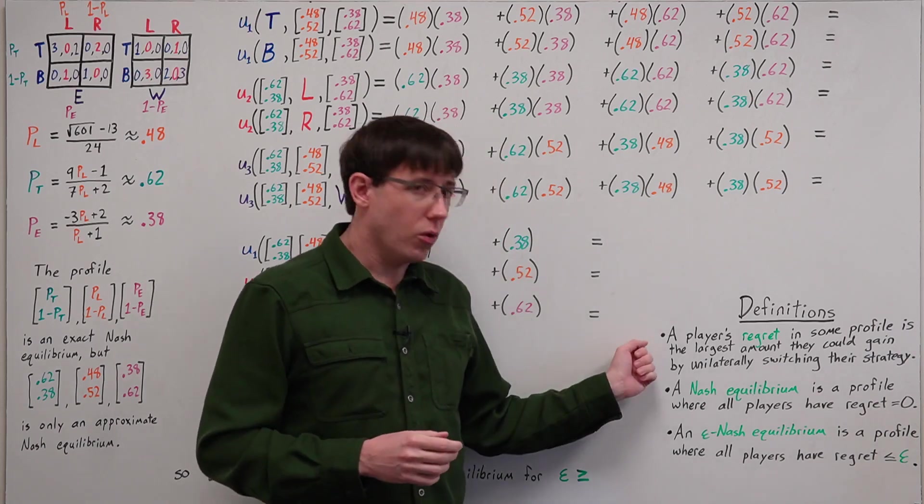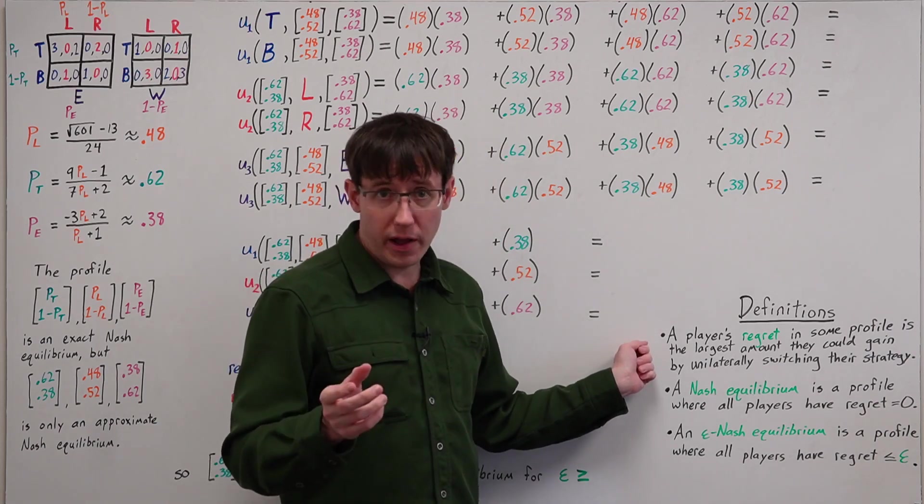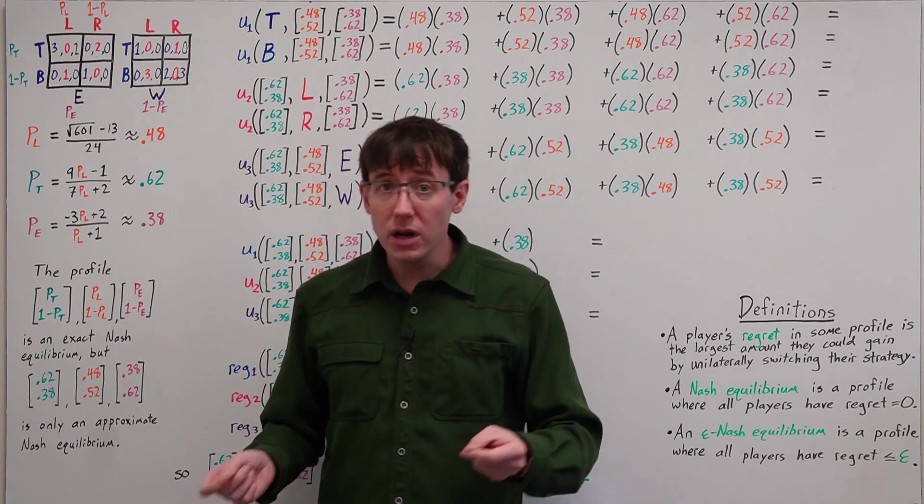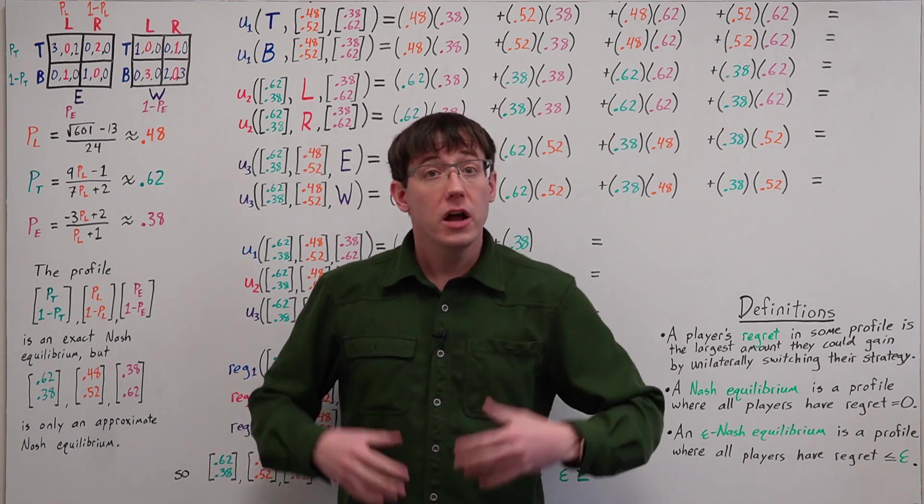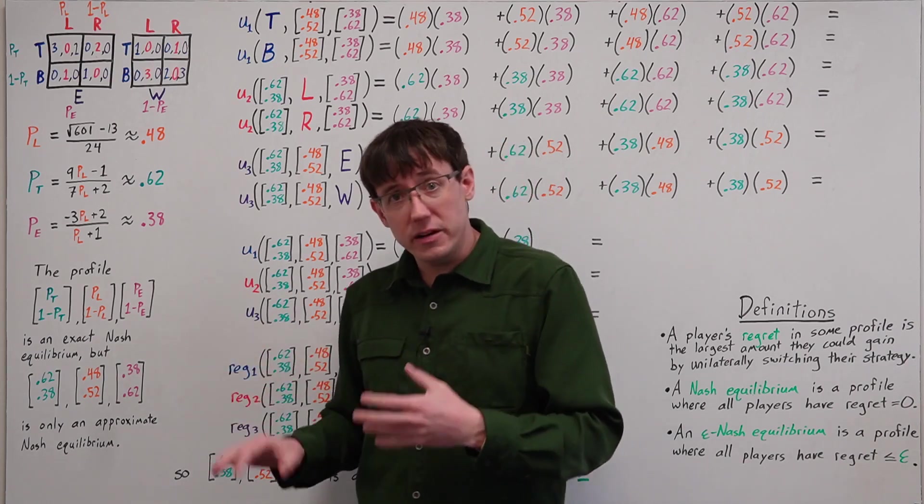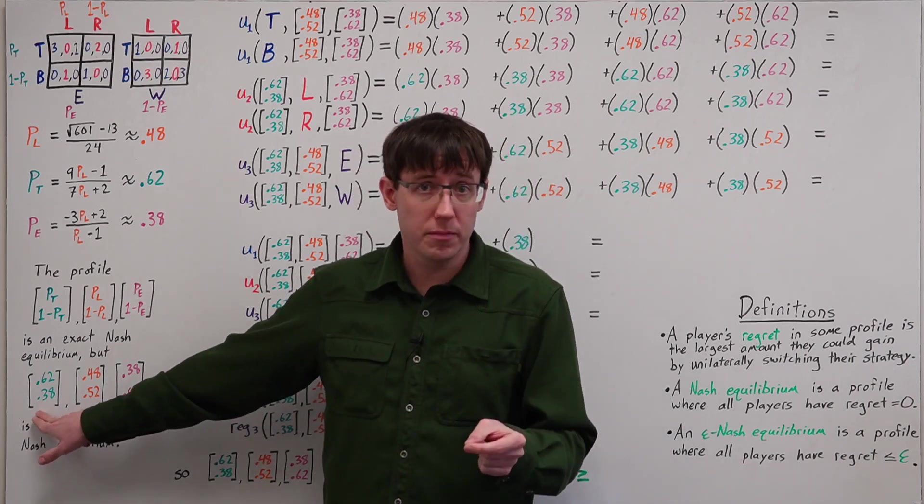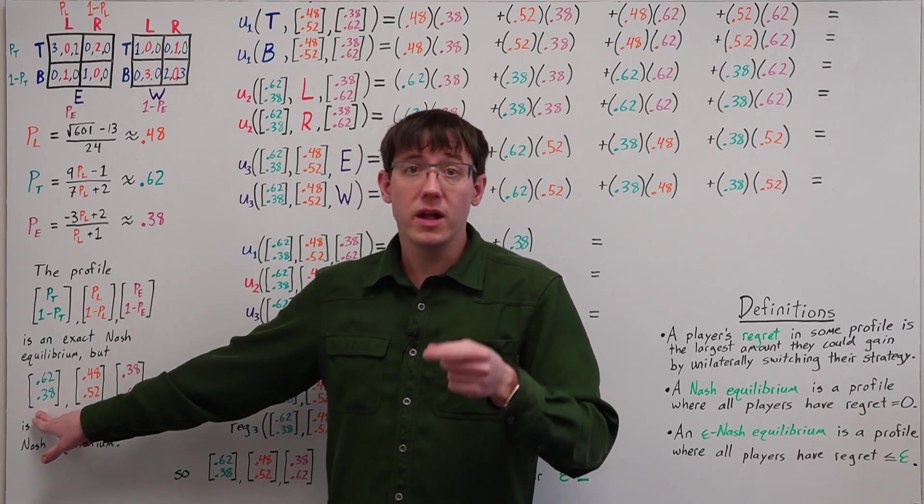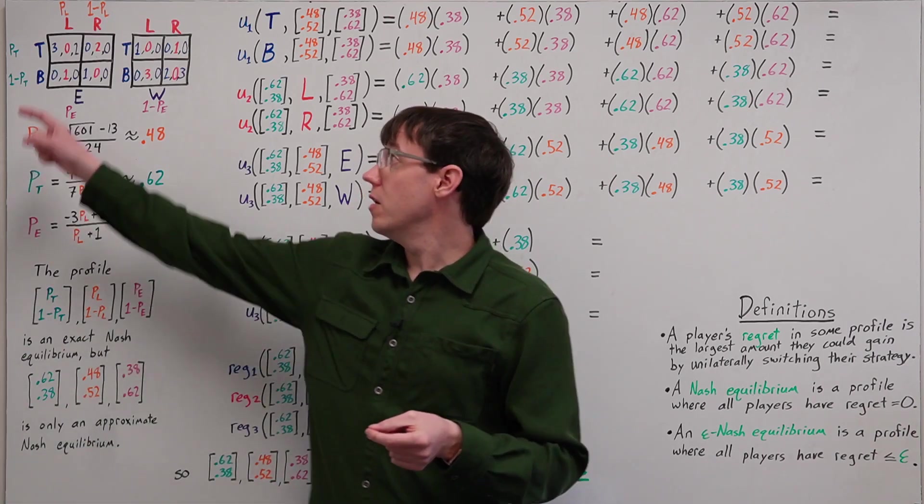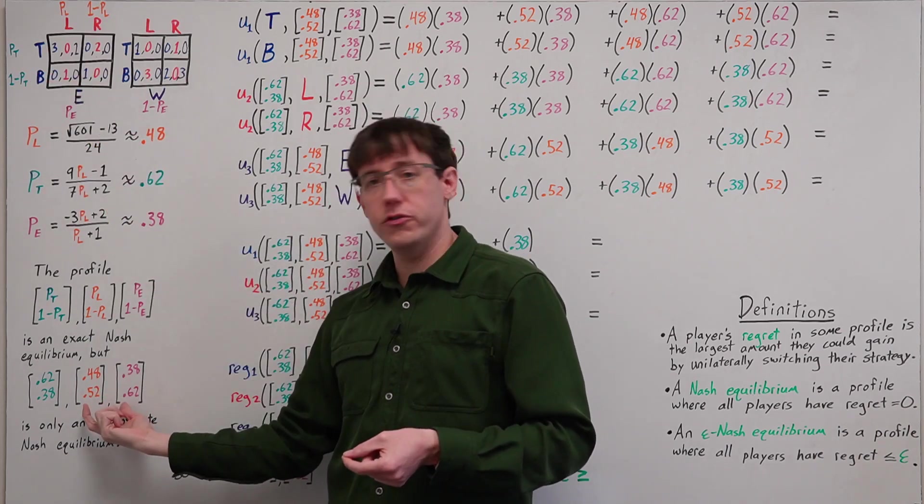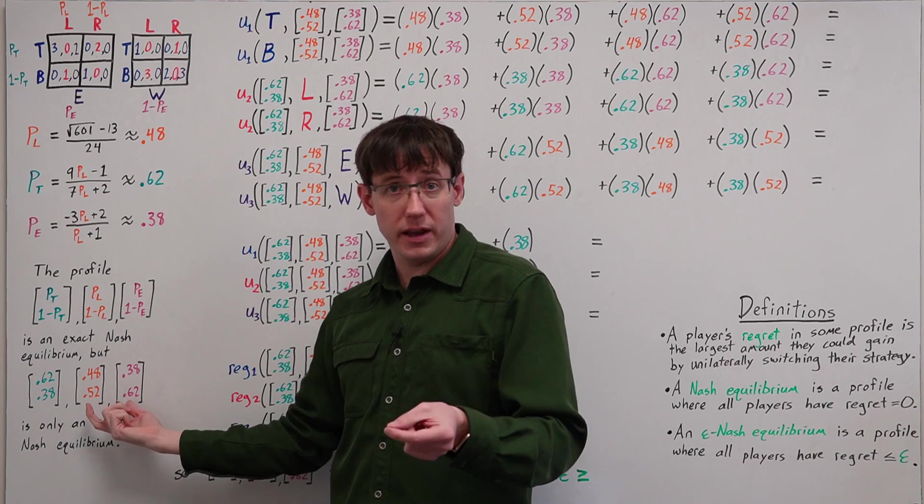And then measure how close this is to an equilibrium in terms of regret. We define regret for a player and a profile as the maximum amount they could gain by unilaterally deviating. To compute this, we need to find the player's expected utility when they play their part in the profile and compare it to their expected utility for each possible action, holding everybody else's strategies from the profile fixed.